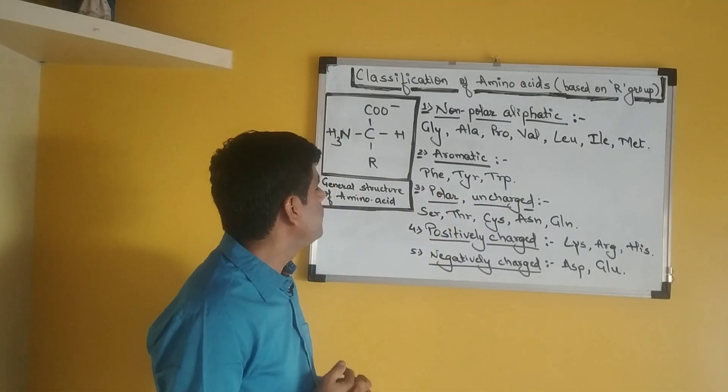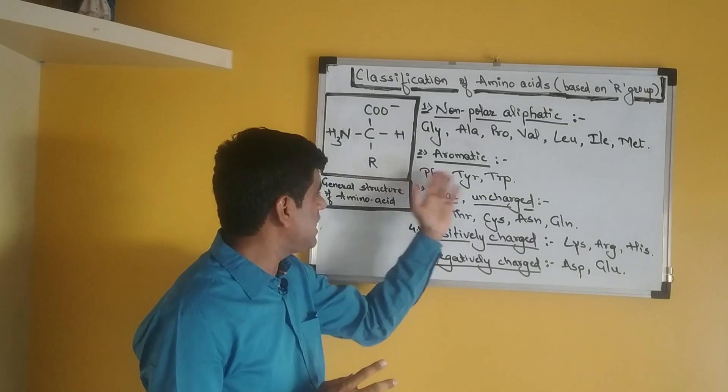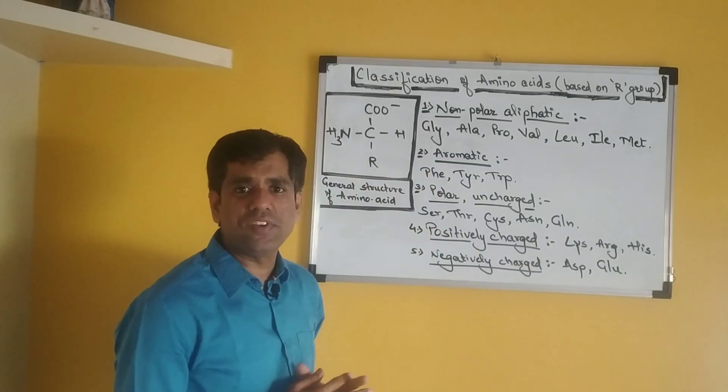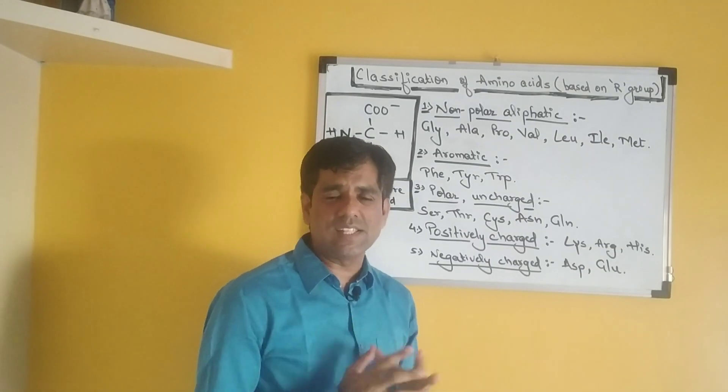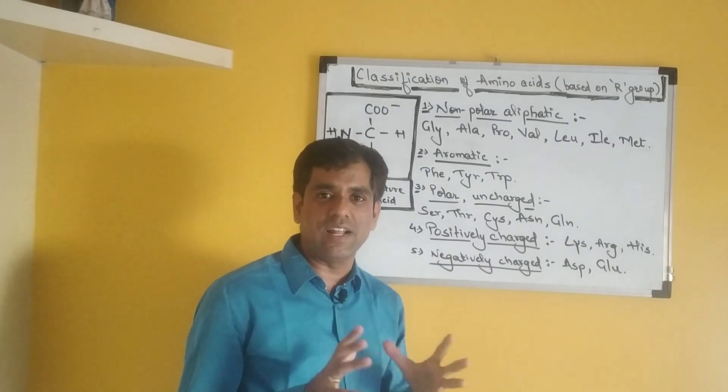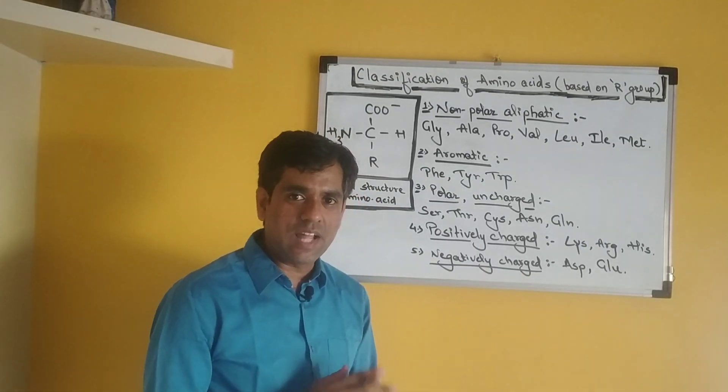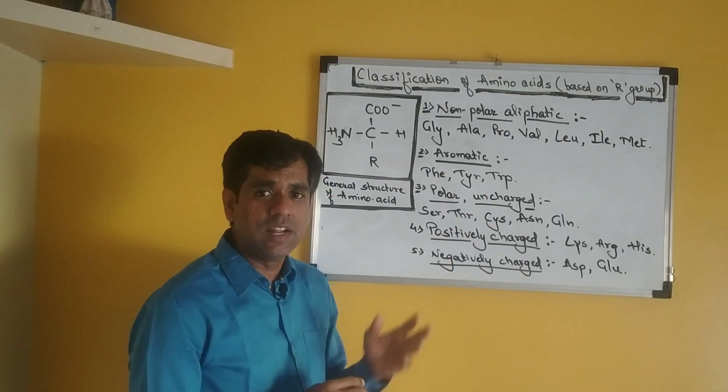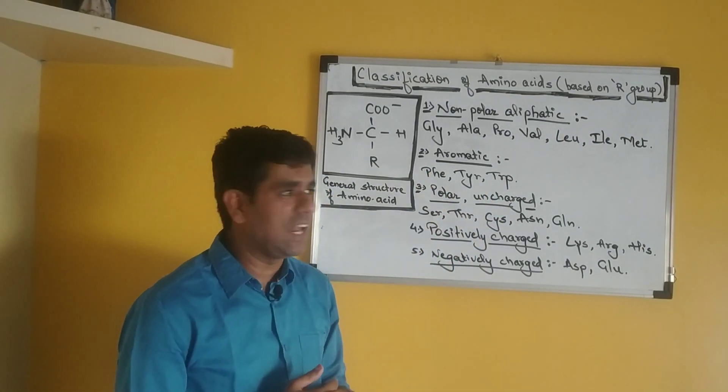These are somewhat polar and you will find that these three amino acids, especially tyrosine and tryptophan, and to some extent even phenylalanine, show characteristic absorbance at UV range. You must have heard of absorption of proteins which is generally done at 280 nanometers. That characteristic absorption is mainly because of tyrosine and tryptophan and to some extent phenylalanine.